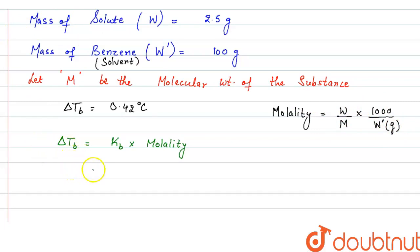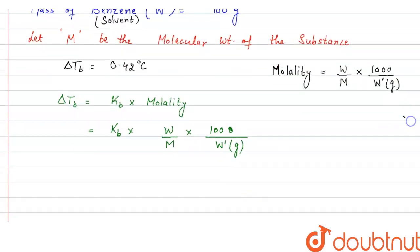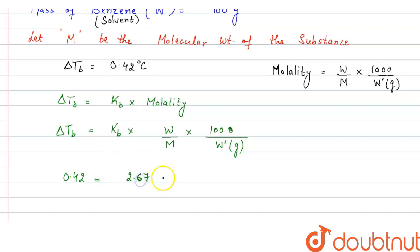From this, ΔTb will be equal to Kb into (W/M) into (1000/W'). Putting in the values: ΔTb is 0.42, Kb is 2.67, W (mass of solute) is 2.5, M is the molecular mass we have to calculate, multiplied by 1000, divided by the weight of solvent in grams which is 100 grams.